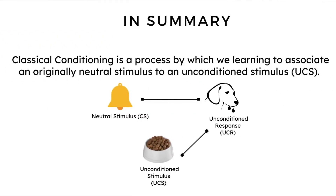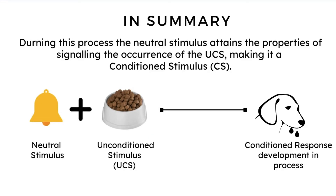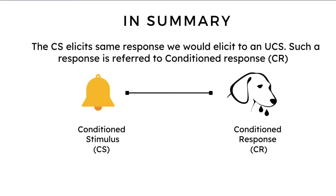In summary, classical conditioning is a process which helps us learn the association between an originally neutral stimulus and an unconditioned stimulus. During the process, the neutral stimulus attains properties that enable it to signal the occurrence of the unconditioned stimulus, allowing organisms to anticipate that the unconditioned stimulus will occur. The neutral stimulus becomes a conditioned stimulus, and the conditioned stimulus gains the properties to elicit the same response we would elicit to an unconditioned stimulus.